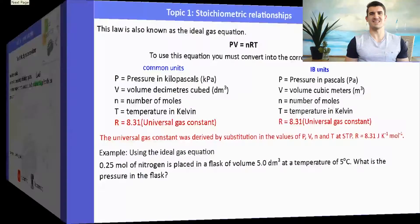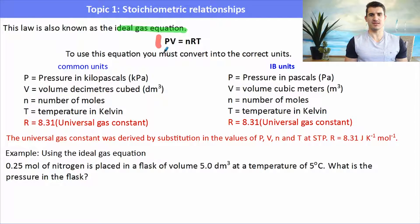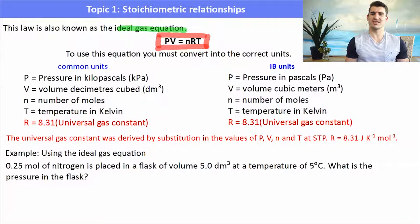So what is the ideal gas equation? The ideal gas equation is PV = nRT, and that's something that must be committed to memory. To use this form of the equation you need to convert those values or variables into the right units.